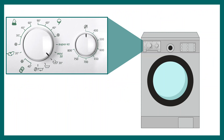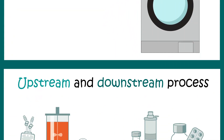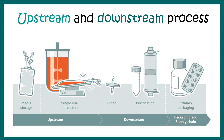Bioreactors are very similar to washing machines, because in a washing machine you have so many operation regimes — and in bioreactors as well, you have different operation regimes or different needs and necessities. Now you understand it's not at all difficult. In the next video, we'll be talking about upstream and downstream processes, because this is another concept that school students always confuse. Stay tuned for the next video.